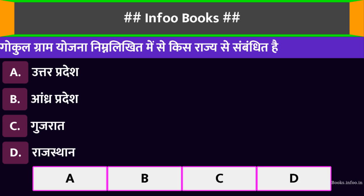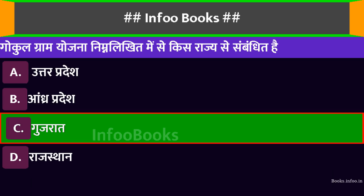गोकुल ग्राम योजना निम्नलिखित में से किस राज्य से संबंधित है? Option A: (उत्तर प्रदेश)। Option B: आंध्र प्रदेश। Option C: गुजरात। Option D: राजस्थान। सही विकल्प है: गुजरात।